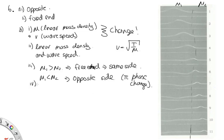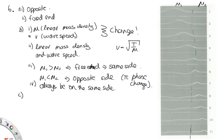Part 4: the transmitted pulse just keeps travelling; there's nothing to cause it to undergo a phase change, so it will always be on the same side as the incident pulse. Part C: if the spring is connected to a very massive chain, it's being reflected off something more dense, so it acts like a fixed end. If it's a very light fishing line, it acts like a free end.